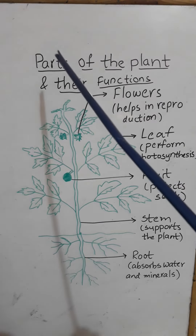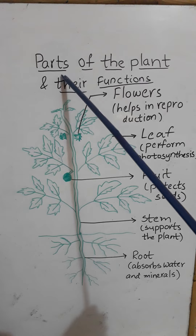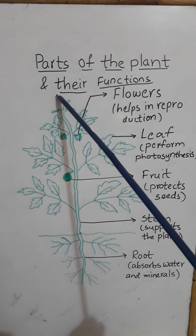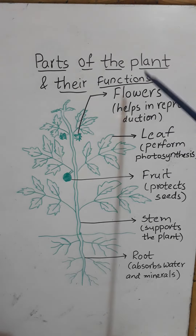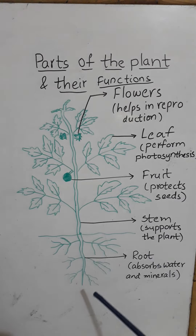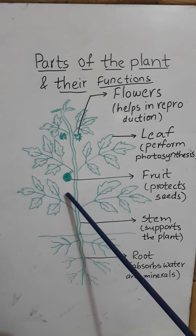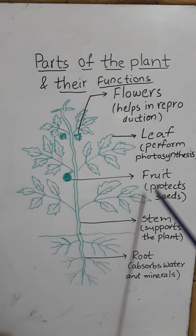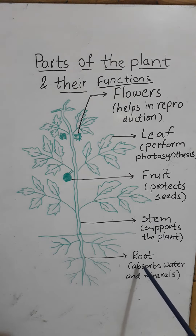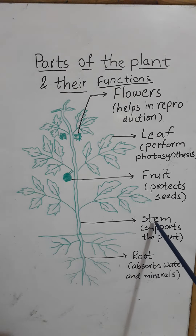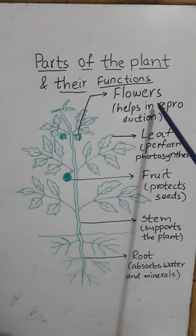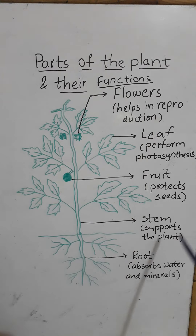Today we are going to see the parts of the plant and their functions. The plant mainly consists of the root system and the shoot system. The main parts of the plant include root, stem, fruit, leaf, and flowers. Now we will see each function that they execute.